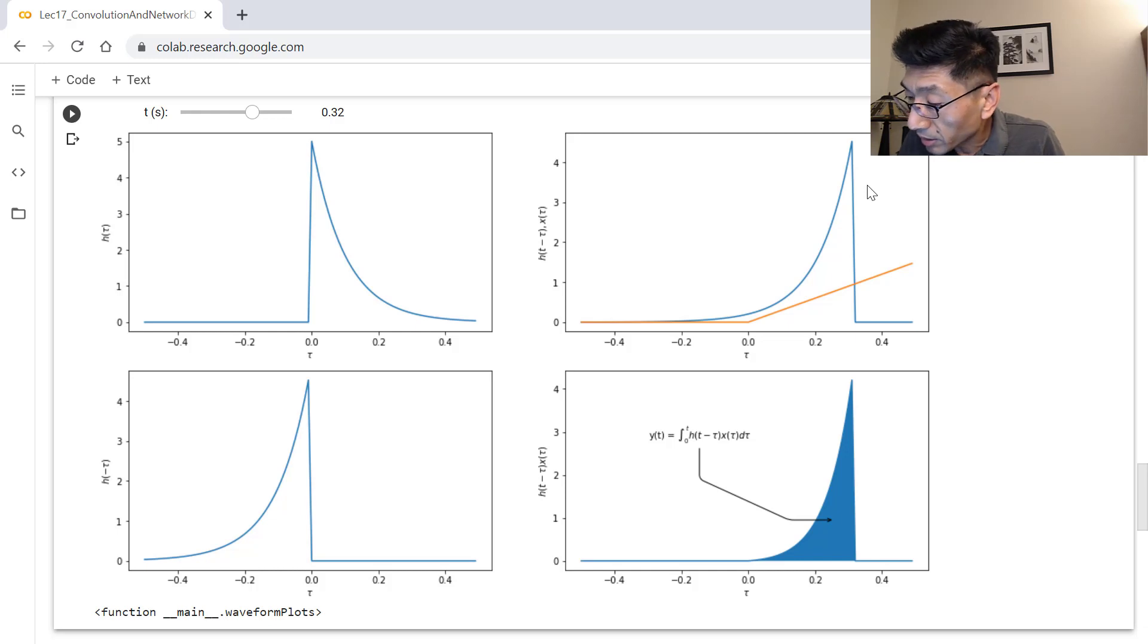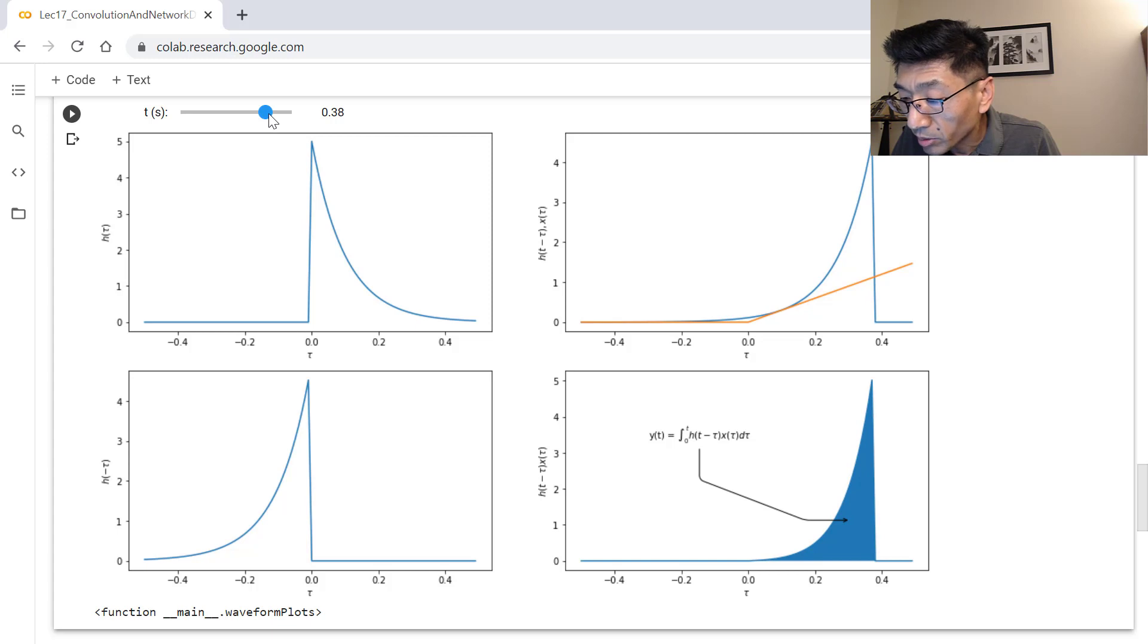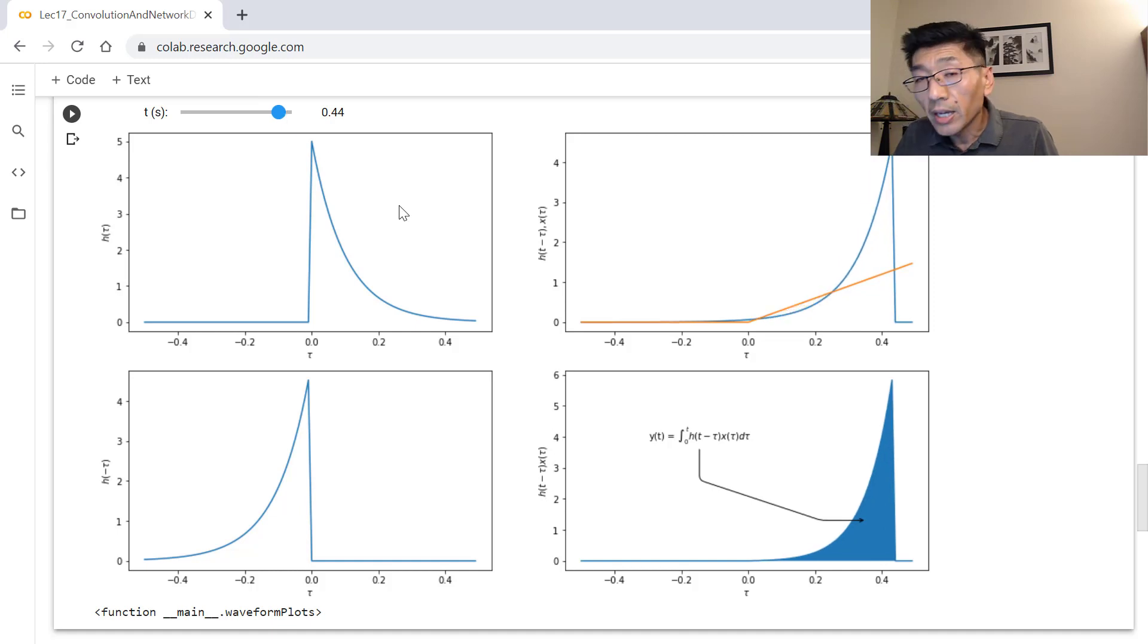I'm looking at the first panel on the second column. So h(t), if I move to the right, you see the waveform actually move, so the time goes to the right. If I move to 0.45, 0.44, you see the h(t minus tau) going to move to the right.